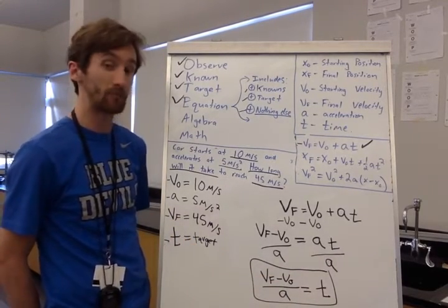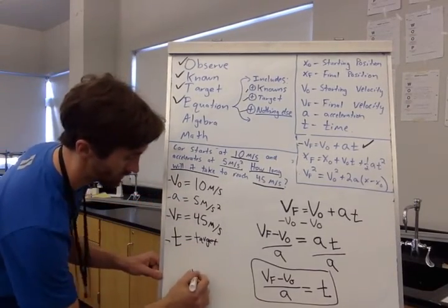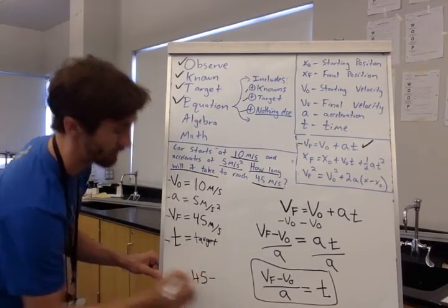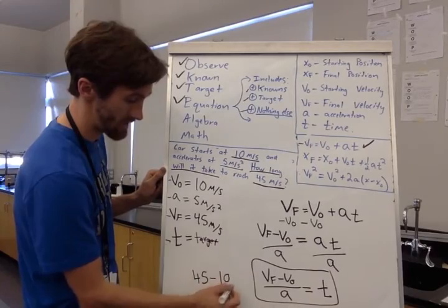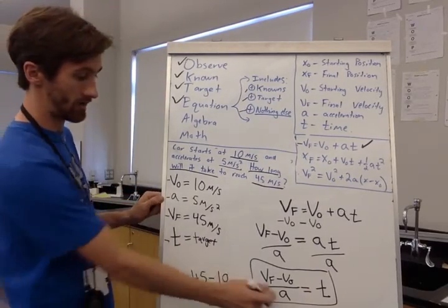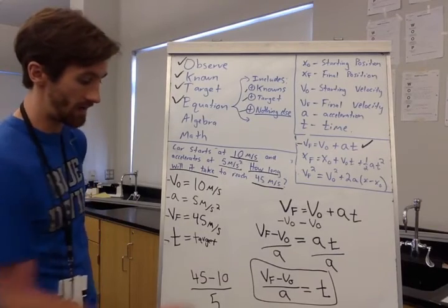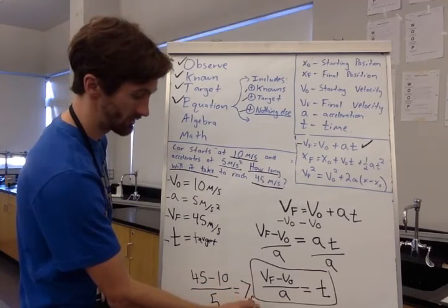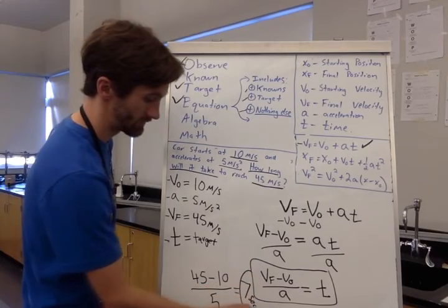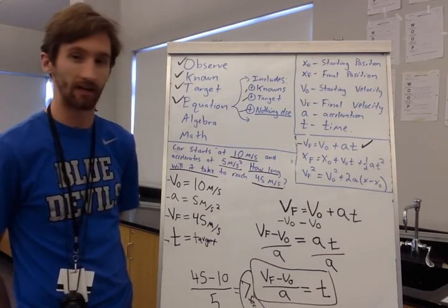And now I'm just going to plug in all of my numbers. So my final velocity 45 minus my initial velocity 10 divided by my acceleration 5. And that's going to give me 7 seconds. So I know that my answer, sorry, I ran out of space a little bit, is 7 seconds.